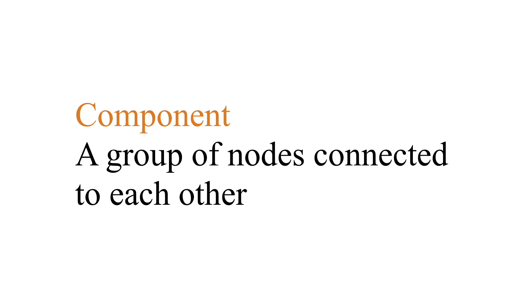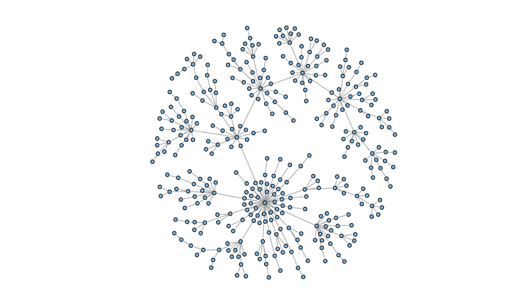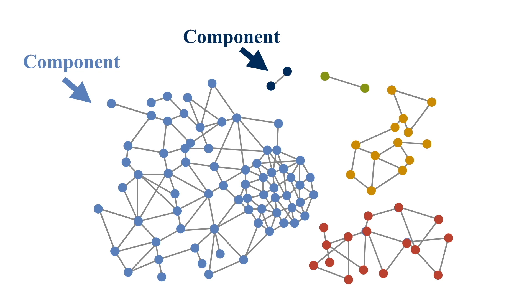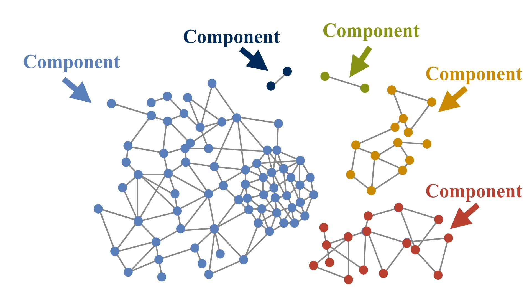What's a component? A component is a group of nodes that are all connected to each other. In many networks, all the nodes are connected to each other, so they form a single component. But in some networks, we can have components that are isolated from each other, and in those situations we wouldn't be able to run a global closeness centrality.